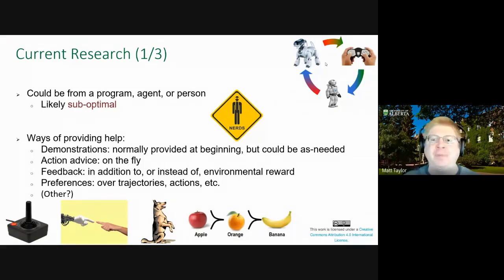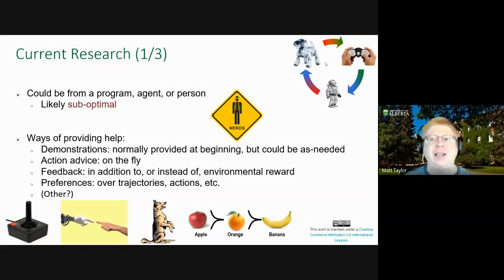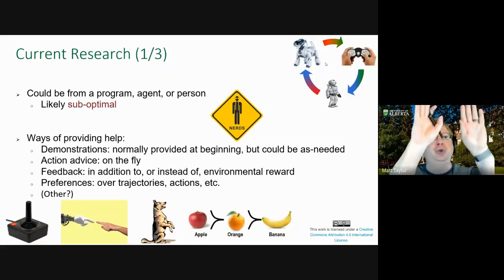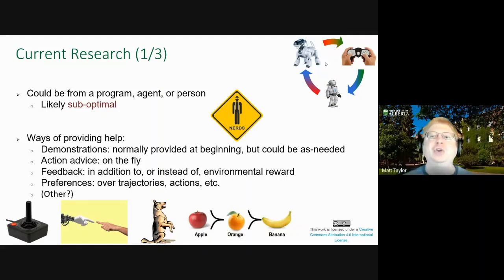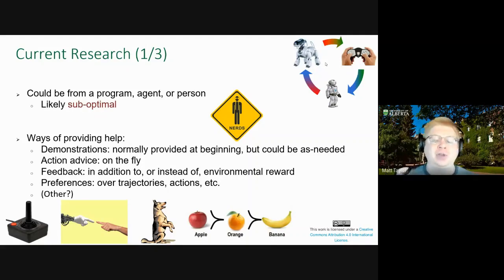If you're giving a demonstration, a non-technical person can help an agent by playing Mario. You can also give action advice — 'you should go up now, you should go left now.' You could think of how we teach dogs by giving feedback — good dog, bad dog — and say good robot, bad robot. Another approach is preferences: show two agents playing Atari and just say which one is better; you can learn pretty fast doing that. You could also give natural language feedback, high-level advice like 'stay away from the cliff.'